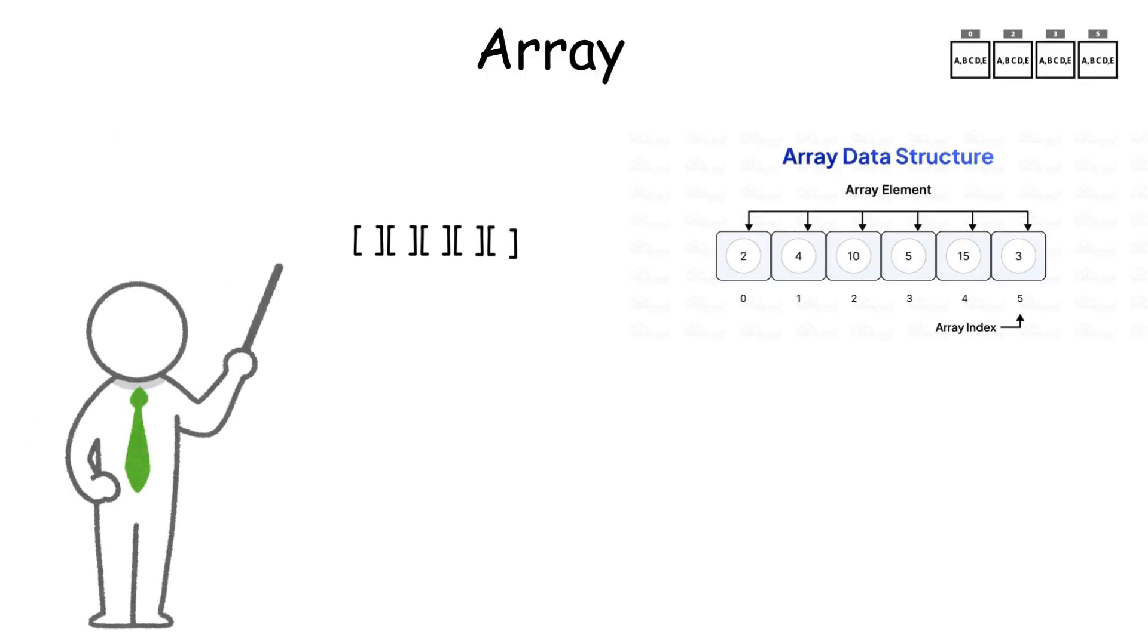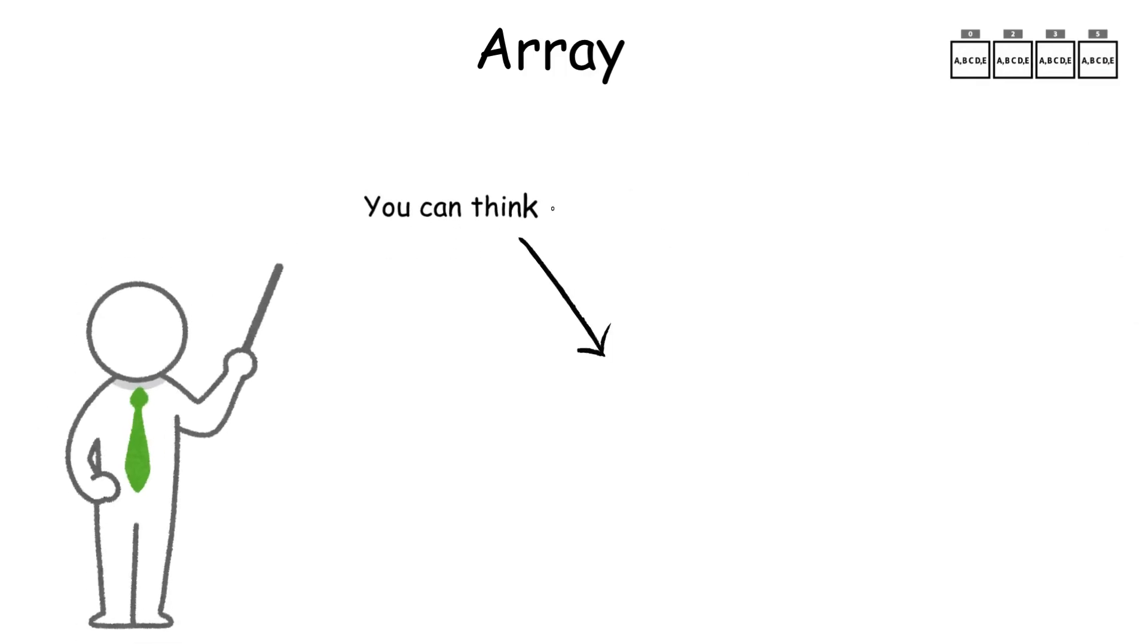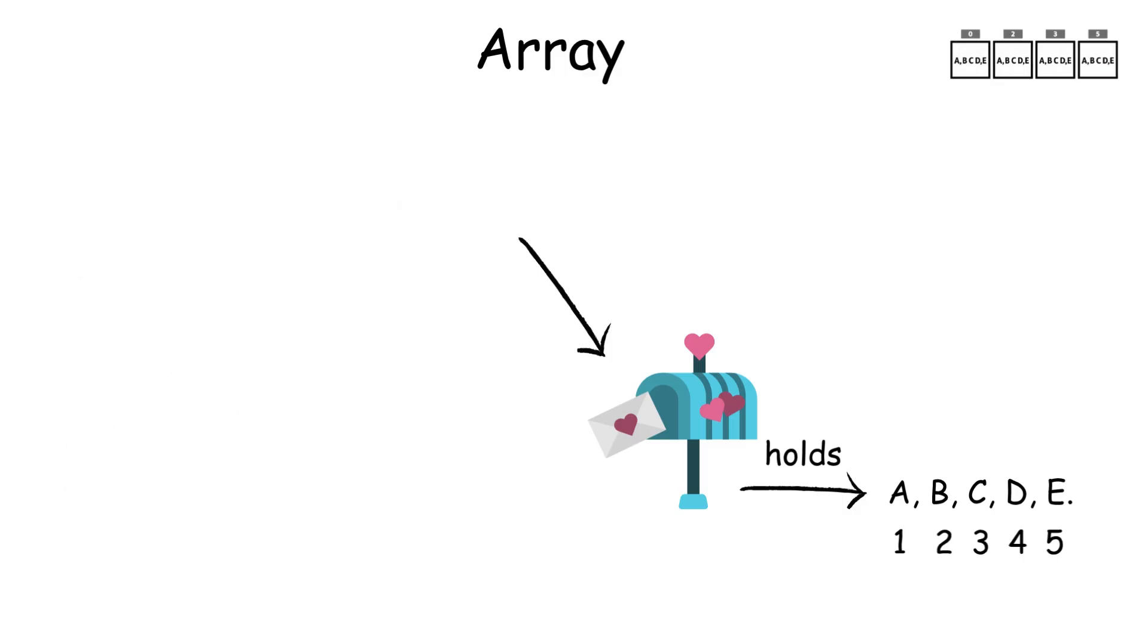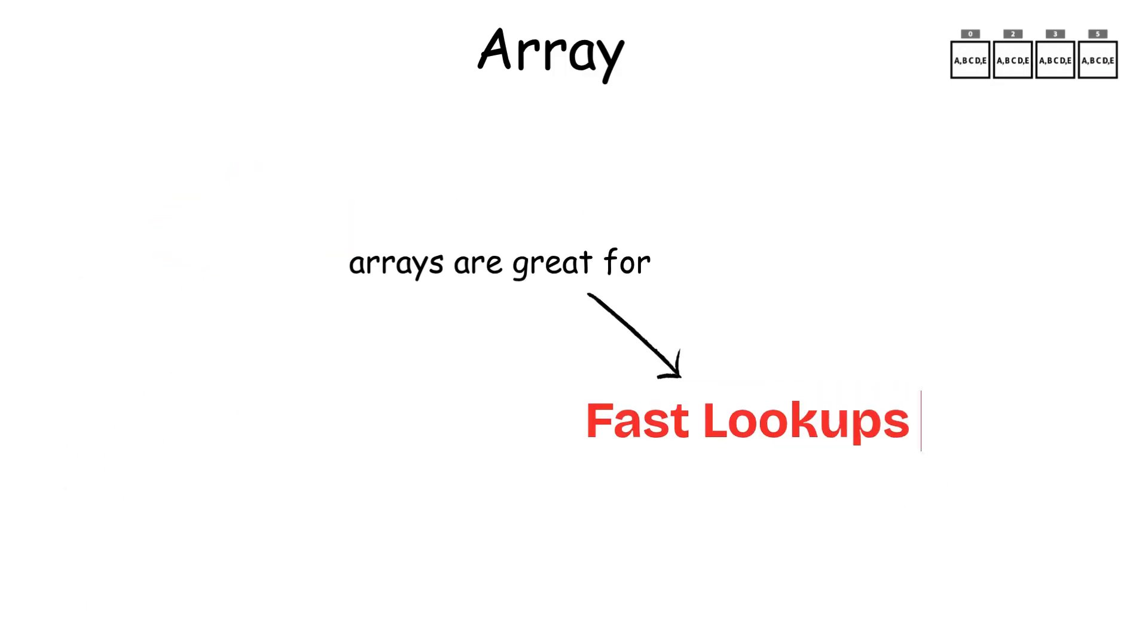Arrays: An array is the simplest structure. It's just a list of items stored next to each other in memory. You can think of it like a row of mailboxes, each holding one piece of data. If you know the index or position of an item, you can grab it instantly. That's why arrays are great for fast lookups.